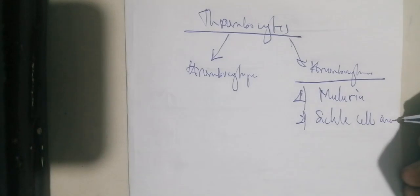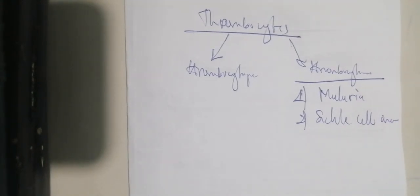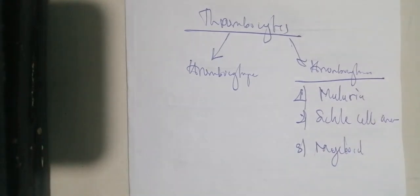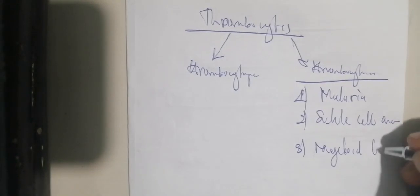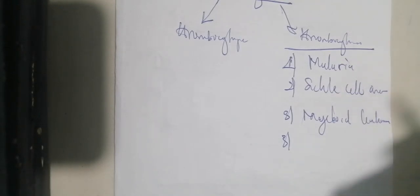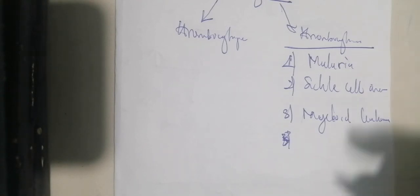The second cause of thrombocytosis is sickle cell anemia — when a patient has sickle cell anemia, you also think of thrombocytosis. The third cause includes myeloid leukemias. Myeloid leukemia involves proliferation of the myeloid pathway, and can result in thrombocytosis. Those are the different elements that can result in a high level of thrombocytes. Myeloid leukemia can be either acute myeloid leukemia or chronic myeloid leukemia.